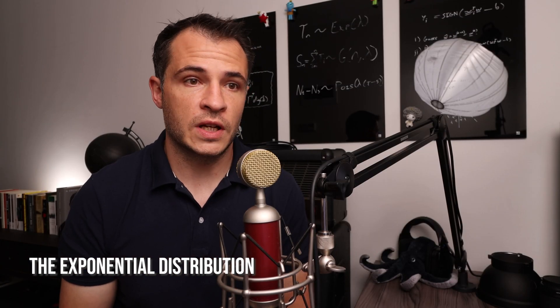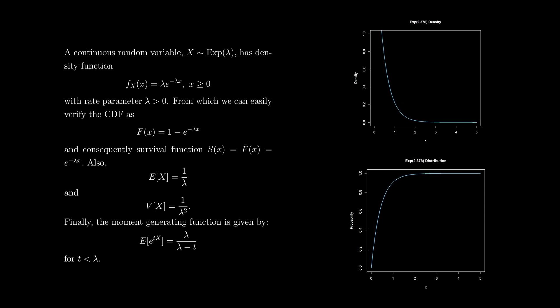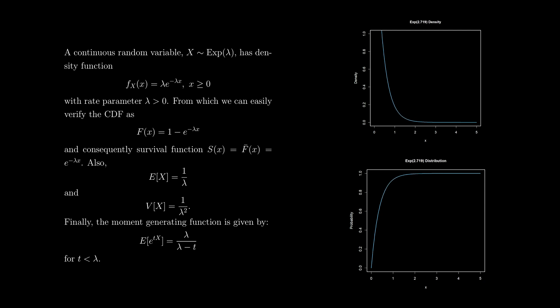Note that this will just be a quick overview — there's obviously a lot more to be said about these distributions, but I'll just cover everything relevant to the present context. So the first distribution of consequence to the analysis of the Poisson process model class is the exponential distribution. A continuous random variable x distributed exponential(lambda) has density function lambda * e^(−lambda*x) on support the positive reals, where lambda is a so-called rate parameter, which is strictly positive.